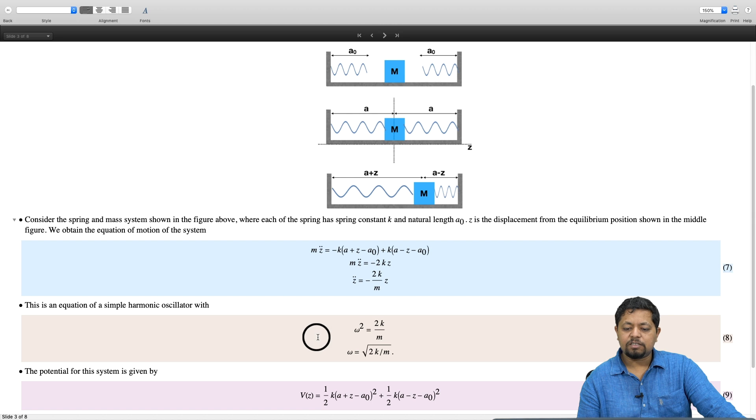In this case, the potential is given by half k times delta x squared where delta x is the elongation in the spring or the contraction in the spring. In this case, a plus z is the length of the spring. So a plus z minus a naught is the elongation in the spring.